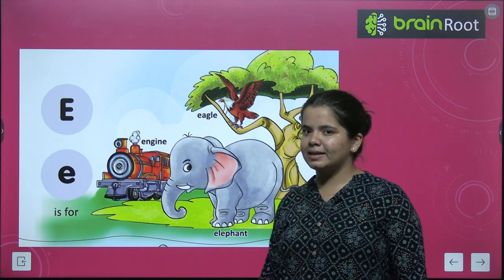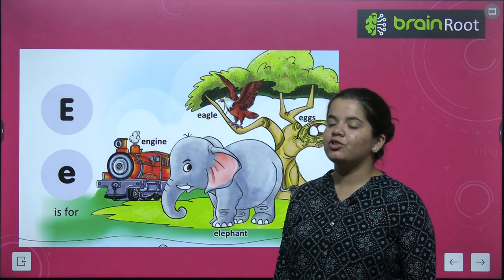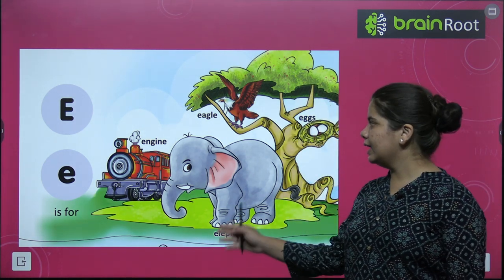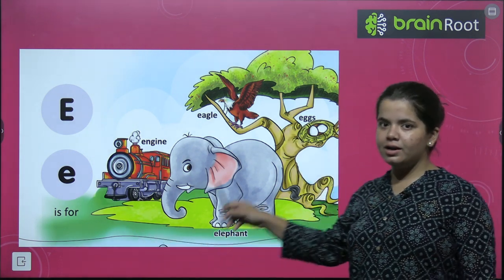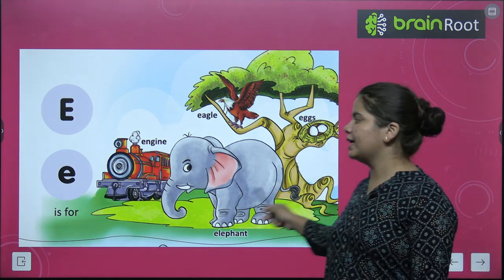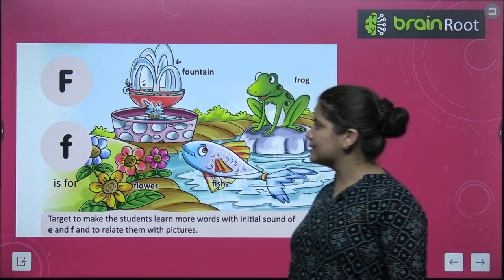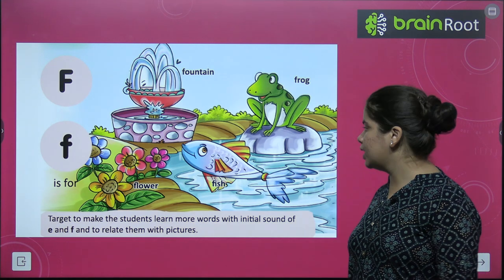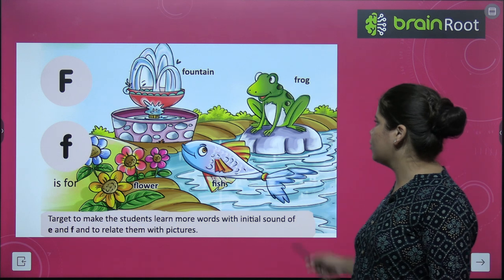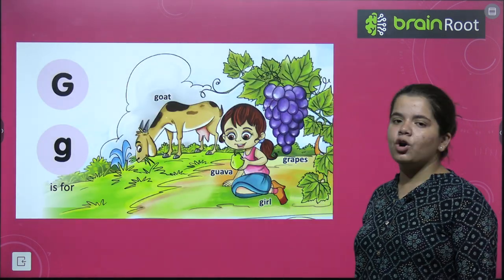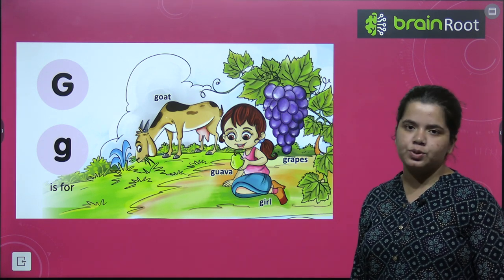Next hai E. E for engine — jisse train chalti hai na, engine. E for eagle, E for elephant, E for eggs. Thik hai, toh yeh haare saare E se start hote hue words hain. Next hamare paas hai F. F for fish, F for flower, F for fountain, F for frog. Aur bhi bahut saare words hote hain jo F se start hote hain.